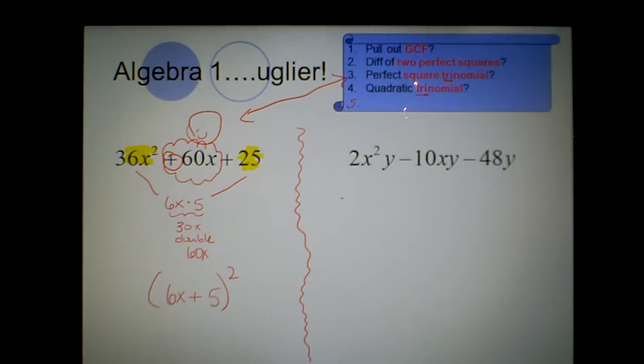Moving over to this one, I see right away that I can pull out a 2, and if I'm clever, I can also see that I can pull out a y. That leaves me with x squared minus 5x minus 24. I would get some credit for getting that far, but I need to look at the second factor and realize that it is number 4, a quadratic trinomial with a leading coefficient that is 1. Therefore, hopefully, this factors very quickly. And now I am done.